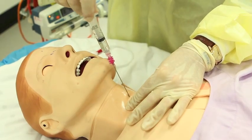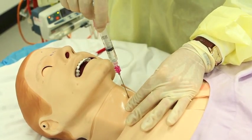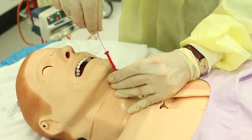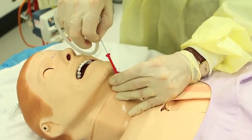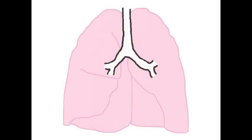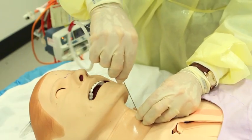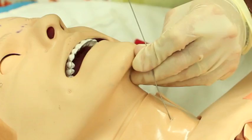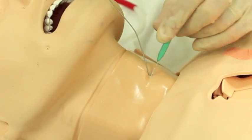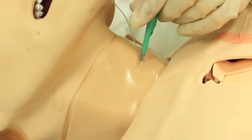After preparations are complete, a needle is inserted into the cricothyroid membrane as described previously. A guide wire is then passed down the needle into the airway. There should be minimal resistance to the passage of the guide wire until the wire enters a bronchus. The needle can then be removed, carefully controlling the wire to ensure it is not dislodged. A small skin incision is made around the wire insertion point to facilitate the passage of the tube.